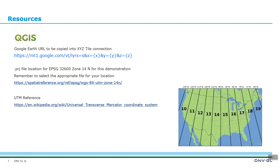I am including resources here for reference. The first is for QGIS — the URL address will need to be pasted into the XYZ tile connection in QGIS. For this type of GIS operation, we are going to use the 32600 Zone 14 North UTM reference system. When doing that, you must download the PRJ file from the spatial reference website, and I have included that URL as well. For further reference on the UTM reference system, see the Wikipedia URL.